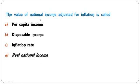Profit equals: corporate tax plus allowance plus retained earning, corporate tax plus interest plus retained earning, income tax plus dividend plus retained earning, or corporate tax plus dividend plus retained earnings? The last option D is the correct answer: profit equals corporate tax plus dividend plus retained earnings.